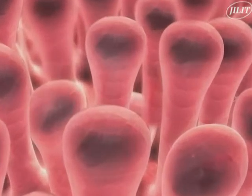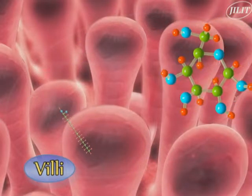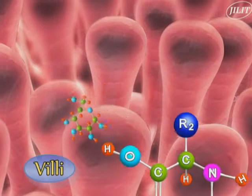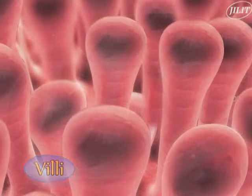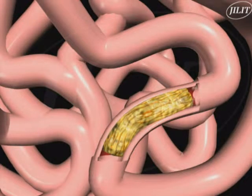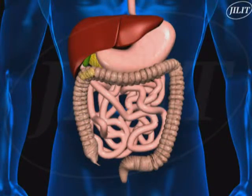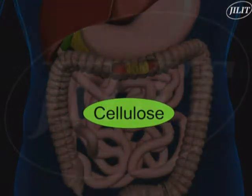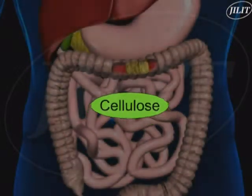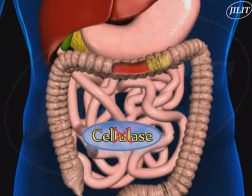These are small enough to be absorbed by the villi present in the lining of the small intestine. Dietary fibre, which consists mainly of cellulose, cannot be digested in the human body, as the enzyme cellulase is not produced in the alimentary canal.